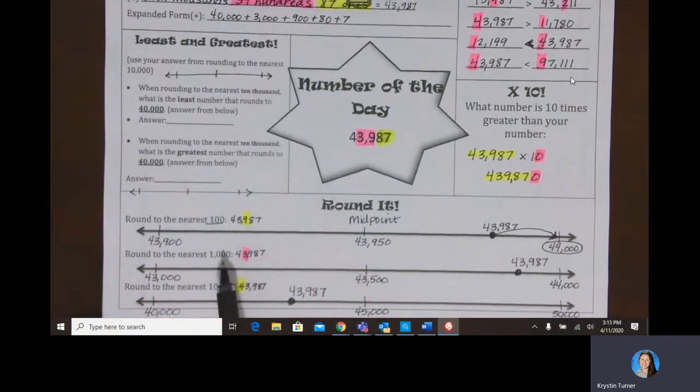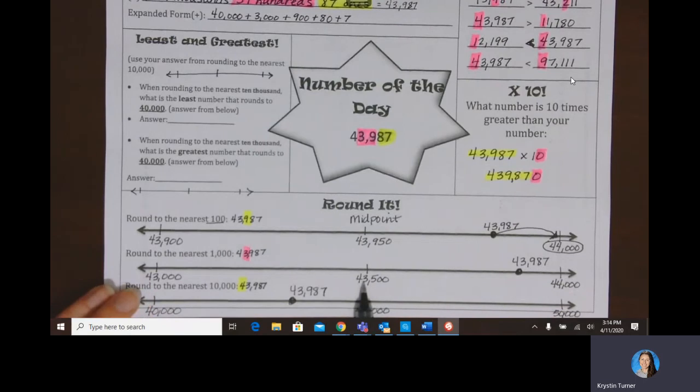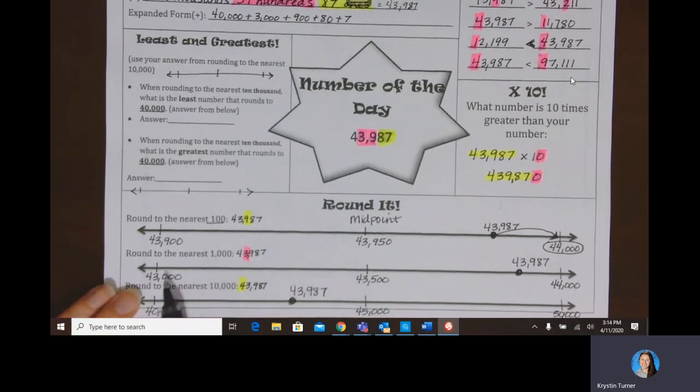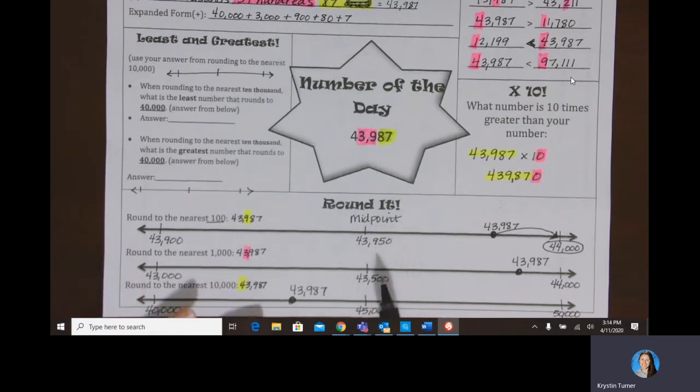When we're rounding to the thousands, now we need to focus on the thousands. So what thousands place does 43,987 live between? It lives between 43,000 and 44,000. So this time I added 1,000 to it. The midpoint would be 43,500. Again, half of 1,000 is 500. So I add 500 here to find my midpoint. Because I added a total of 1,000, half of it is 500. That would get me in the middle.